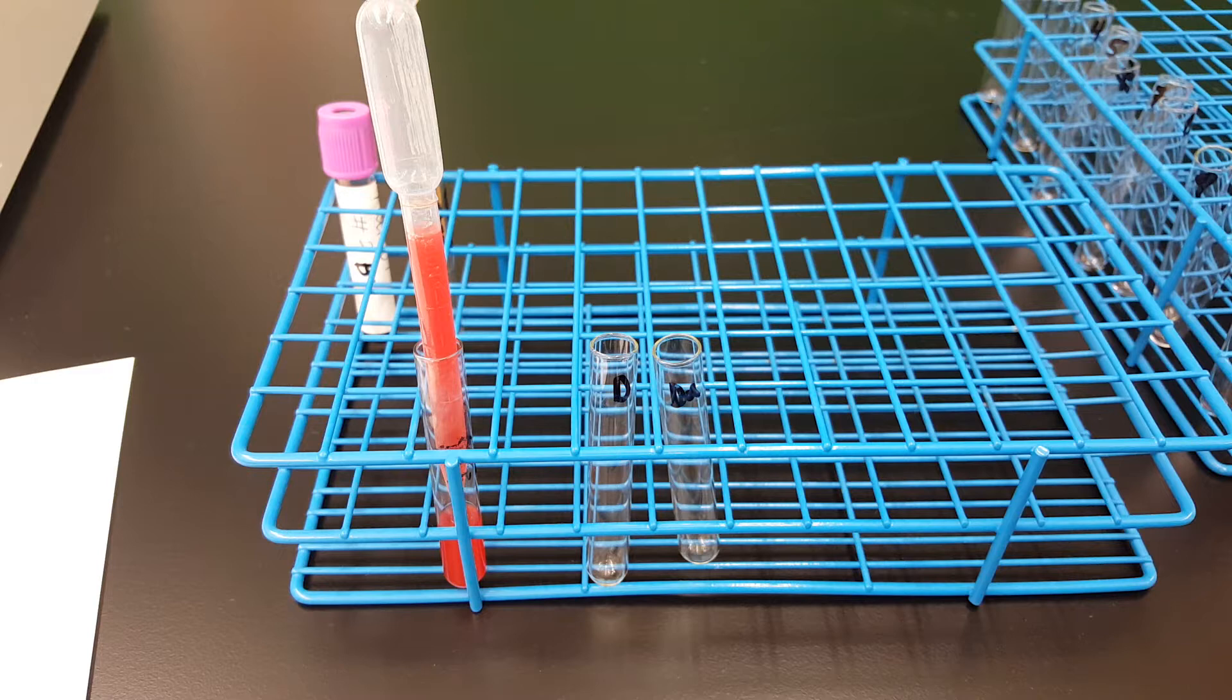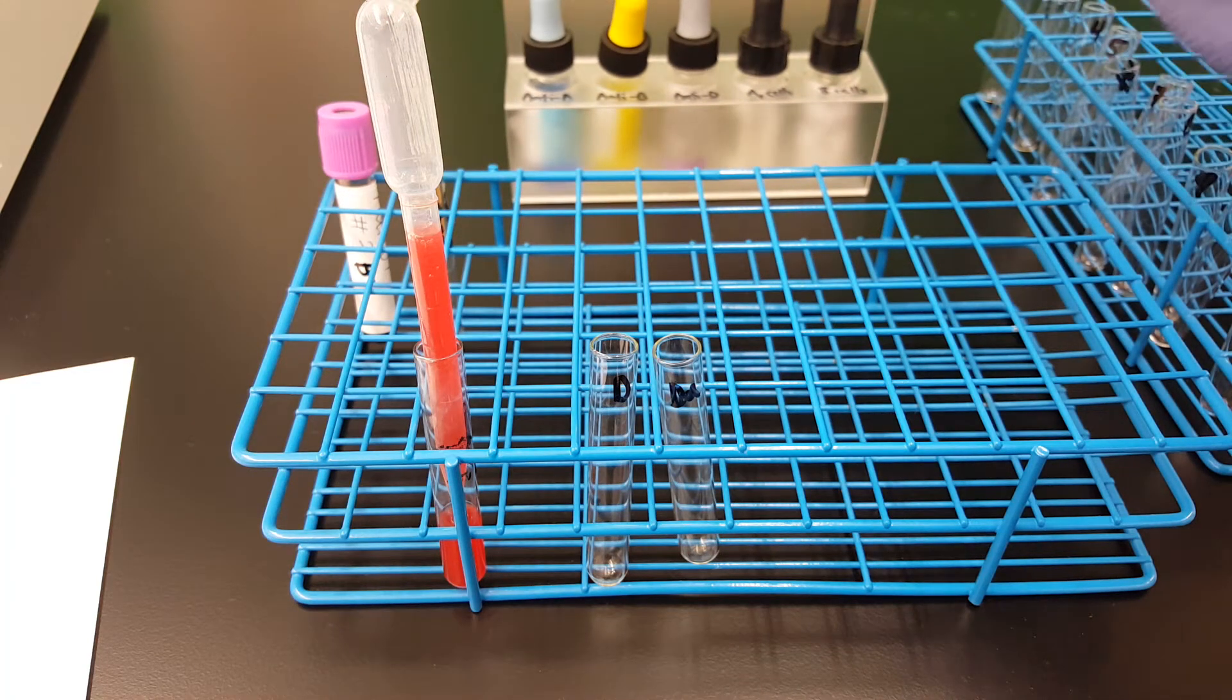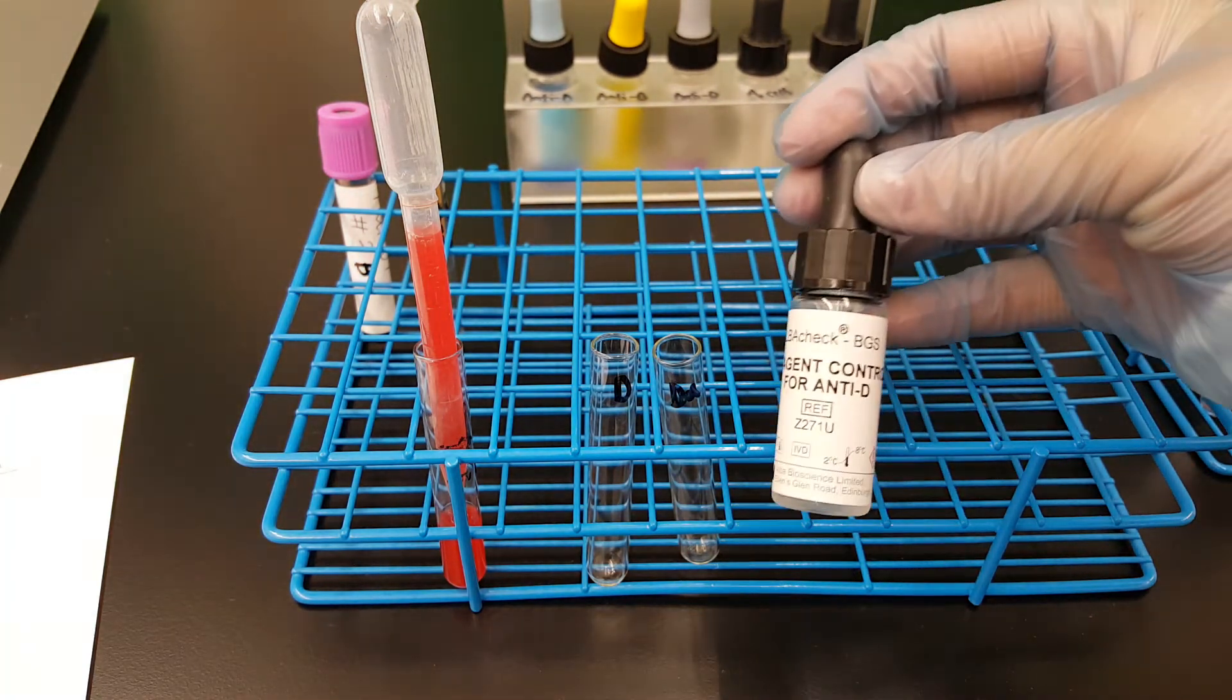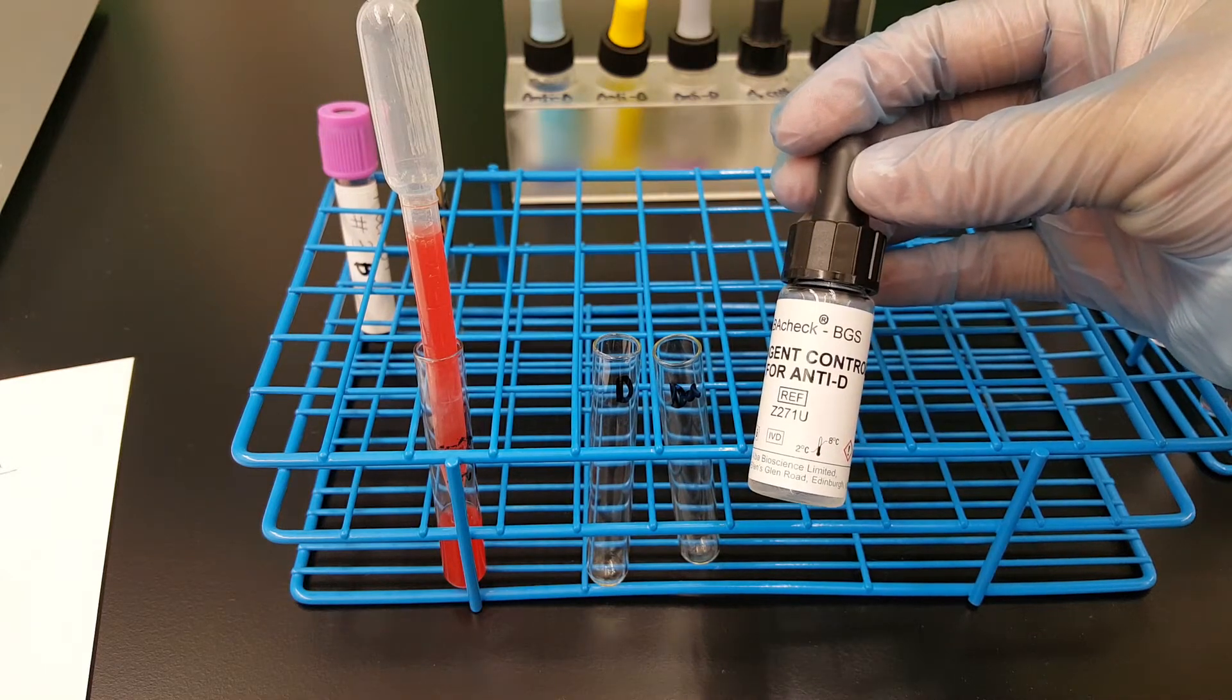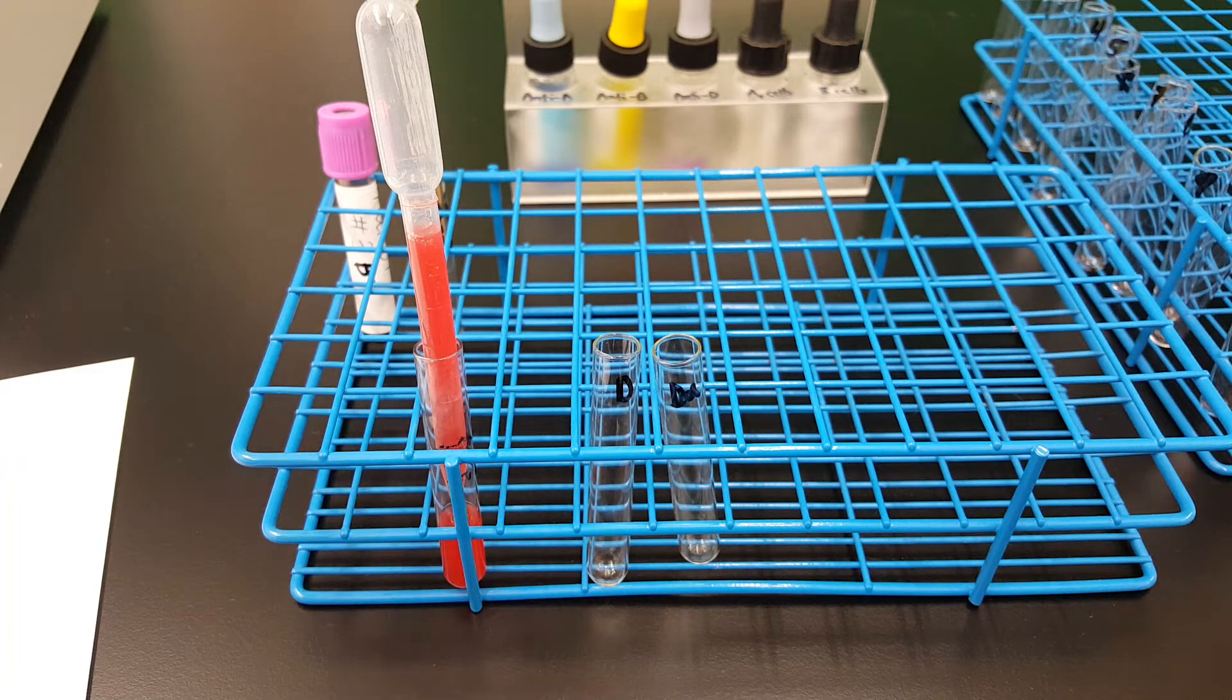What we're going to do is test what we tested previously with the ABO. We're going to do the D that we did before, but this time we're going to add the anti-D control reagent.